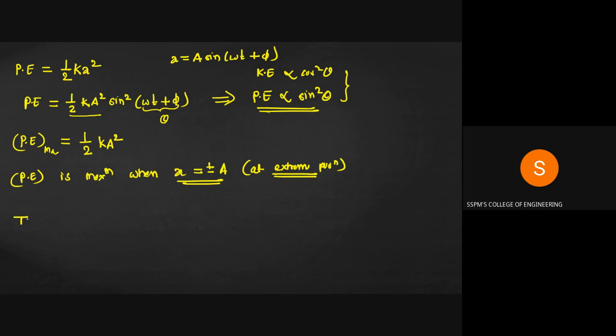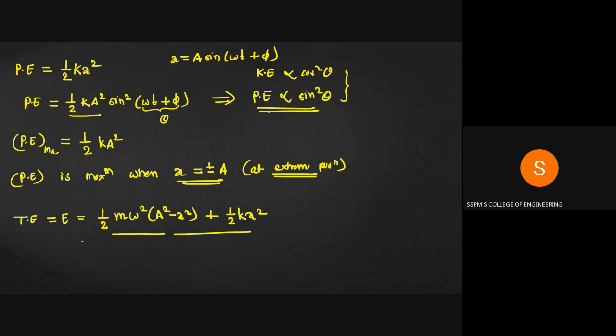Total energy is KE + PE = (1/2)mω²(A² − x²) + (1/2)Kx². This is the equation for total energy. From the formulas for kinetic and potential energy, we can plot the energy variation graph between the extreme points.